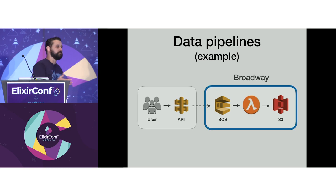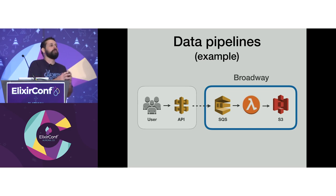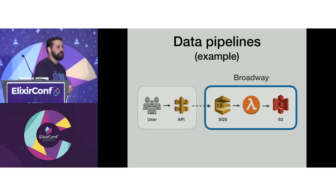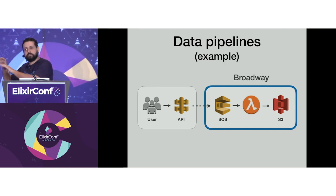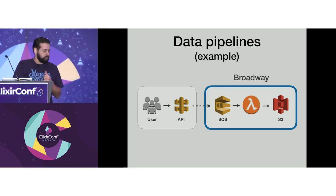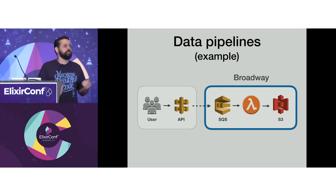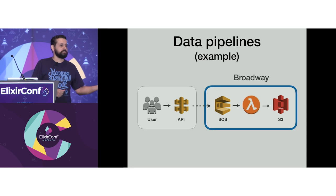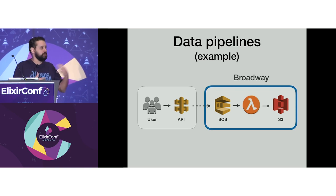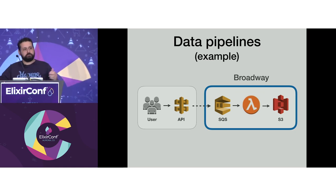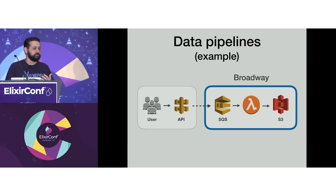Here's where Broadway comes in. You can use Broadway to streamline that process and create that pipeline. In our example, you gather information from the user, send it to SQS so it can be processed asynchronously — later, without any relation to the actual flow of your application. The pipeline consumes those messages from SQS, transforms the data, and then uploads the result into an S3 bucket, so your machine learning engine can read it later.